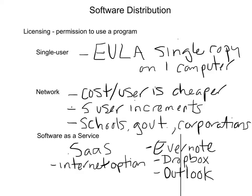Software as a service is becoming huge and very fast-growing. People like it because it doesn't take up storage on your computer, it's accessible everywhere across multiple devices, and it doesn't take as long to get started compared to downloading the whole program.